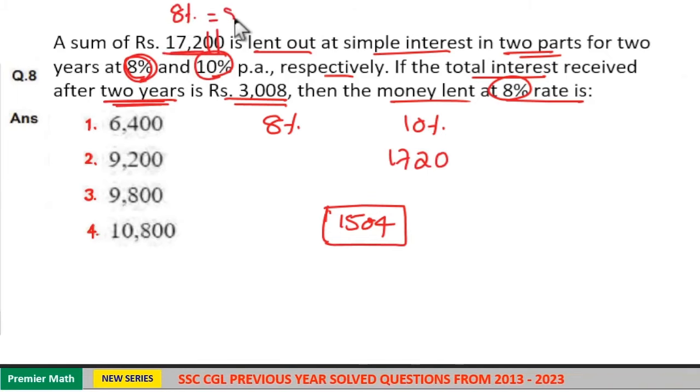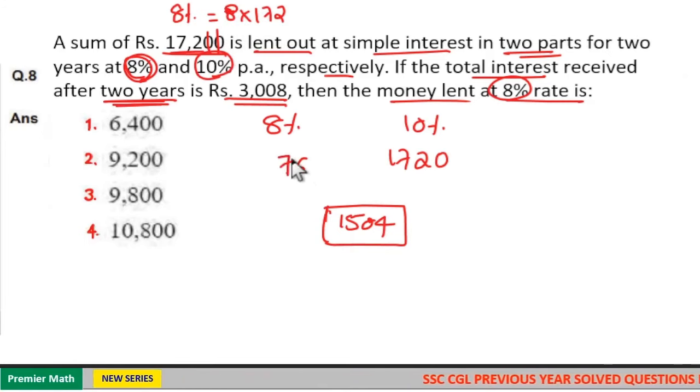So 8% is equal to 8 into Rs. 172, which is equal to 8 into 16 plus 8 into 1. 8 into 16 is 128, 8 into 1 is 8, plus 128 is 136. So 8% of sum is Rs. 1,376.